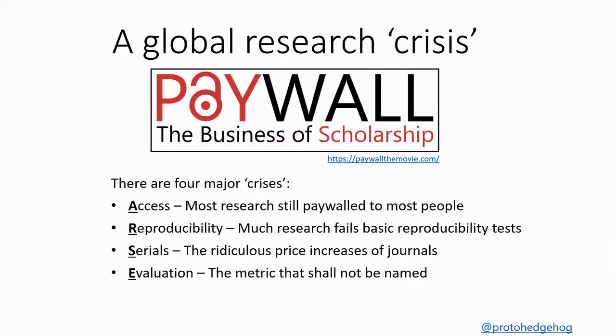One of the consequences are what I like to call the four research crises. The first is the access crisis — the fact that most people on this planet still do not have access to most research. The second is the reproducibility crisis, where most statistical or empirical research seems to fail basic reproducibility tests, which is one of the foundational elements of rigorous research.